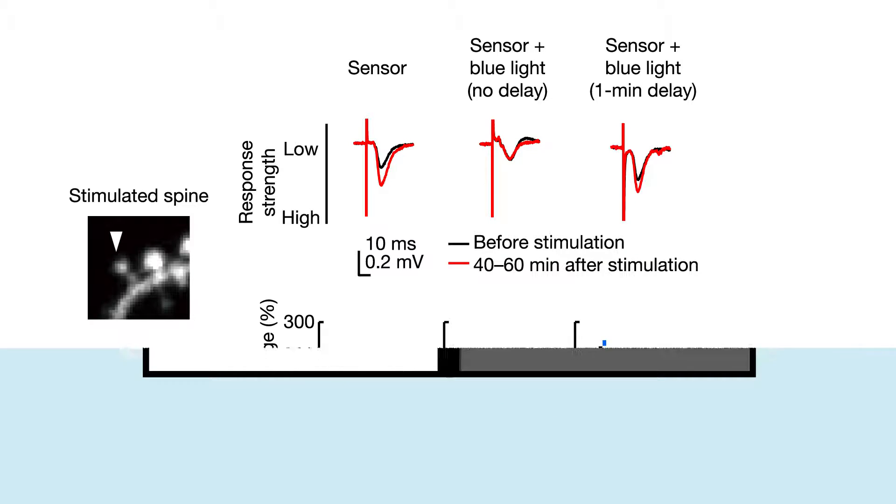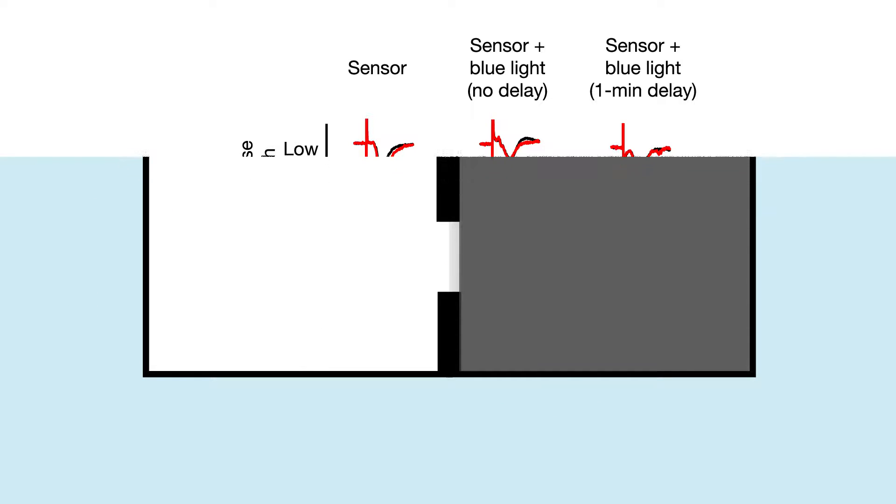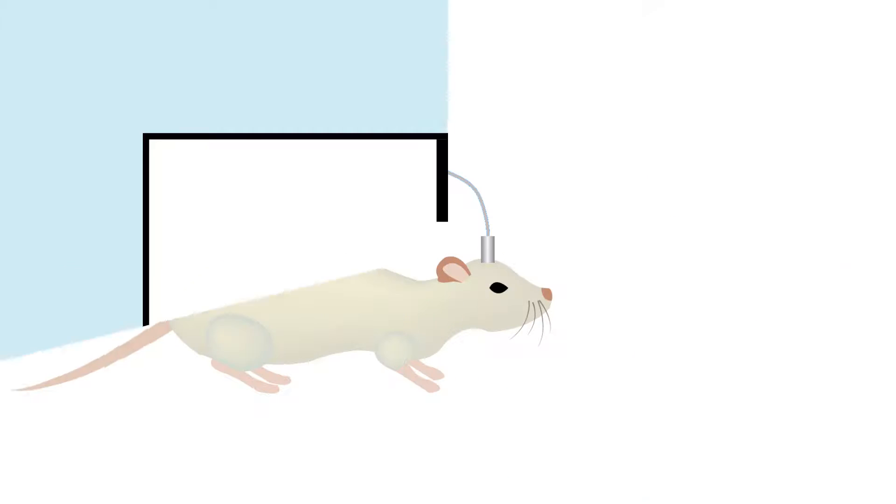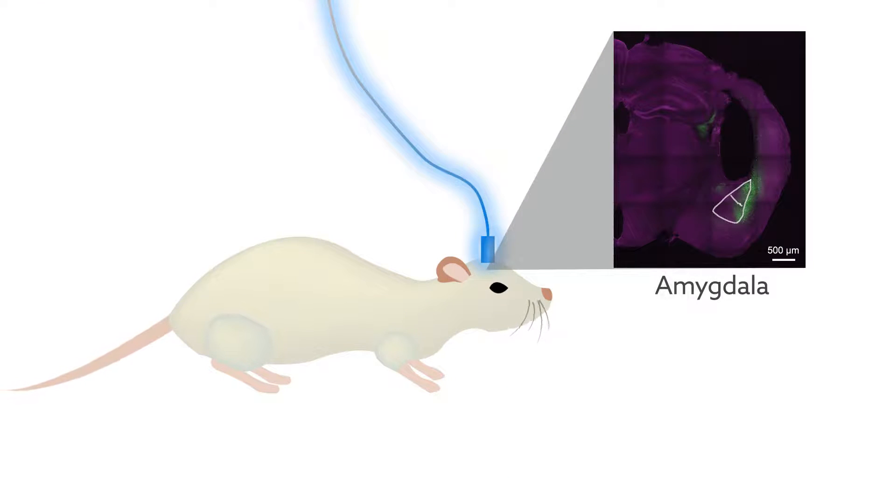Next, the researchers looked at the timing of CAMK2 activity needed for actual memory formation. They placed mice in the bright side of two rooms connected by a hole and trained the mice to avoid the dark room by giving them a tiny electrical shock whenever they entered it. In some mice, they also shined blue light to inhibit CAMK2 in the amygdala, a brain region important for this type of memory formation.